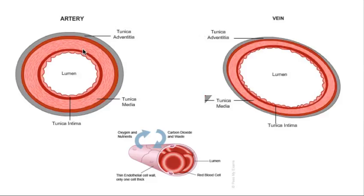They have two major properties: elasticity and the ability to contract. The reason why is because they have thick muscular walls, and that's to carry blood at high speeds under pressure. As you can see here, they have that thick muscular wall on this diagram.